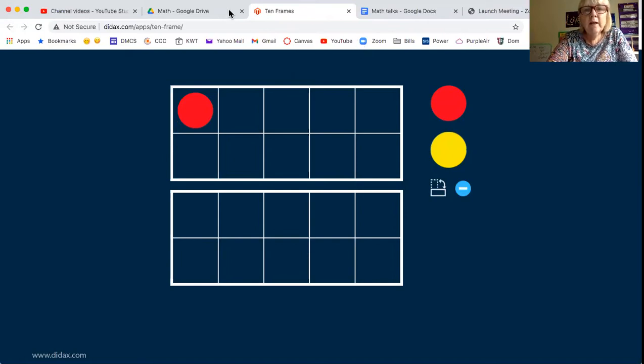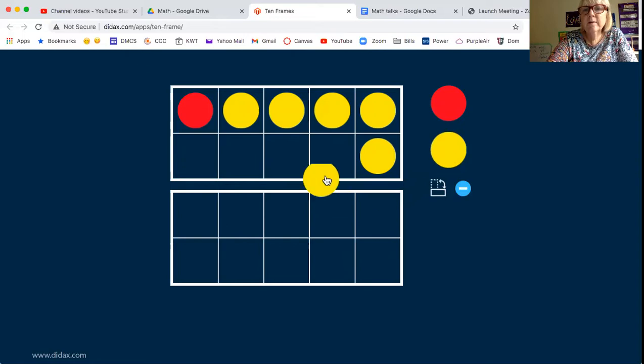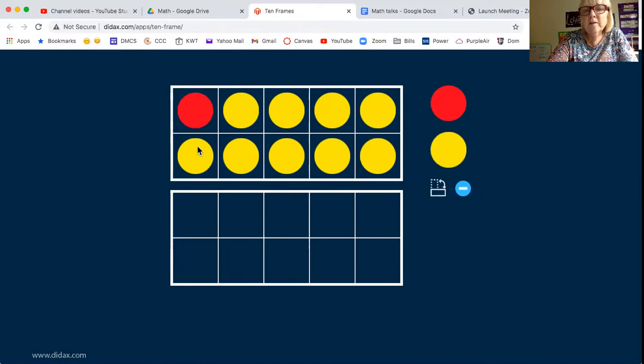So I've put in one dot in here. What is its partner to make 10? Do you know? Let's do its partner in yellow. Fill in all of the parts of the 10 frame. That's right. One and nine are partners, or nine and one are partners for 10.